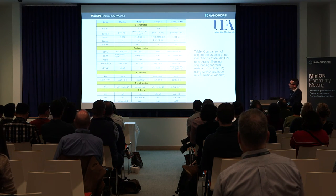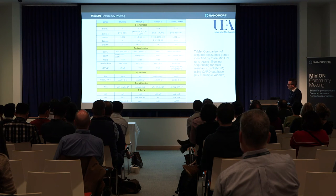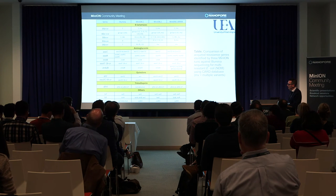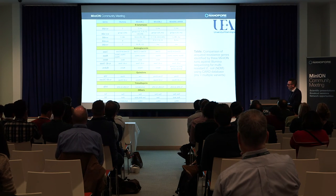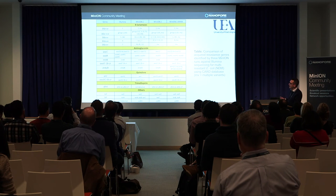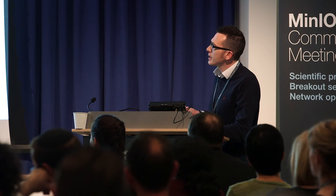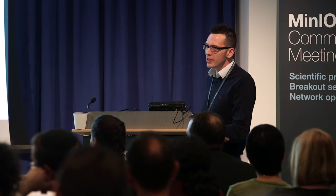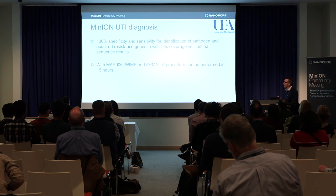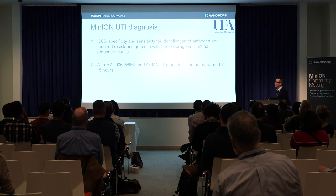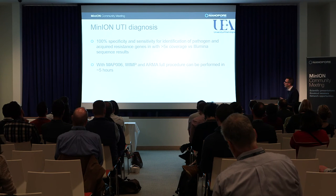Looking at all the results, we're pretty much finding the right family. There's one thing we're not quite sure about yet — a gene not detected by Illumina but which we have detected, and we think it probably is in the Illumina data. Overall, the correlation is excellent. With practically 100% specificity and sensitivity for identification of a pathogen and all acquired resistance genes — not mutational resistance genes — as long as we have 5x MinION coverage, we have 100% sensitivity and specificity compared to Illumina sequencing.